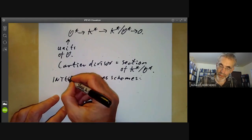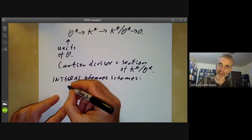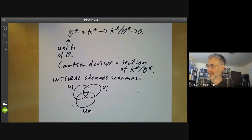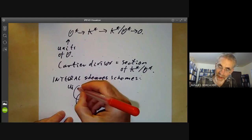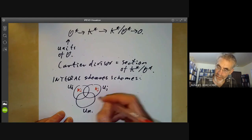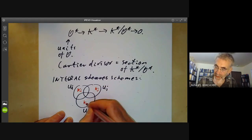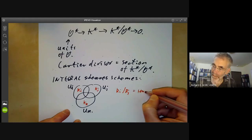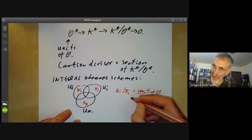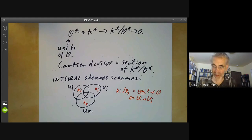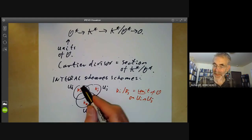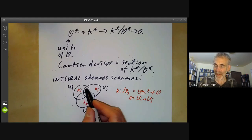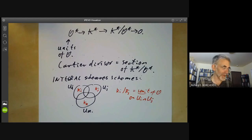All this means is you cover your scheme by a finite number of open sets, say U_i, U_j and U_k. On each of these open sets, you choose an element K_i of the function field. And K_i over K_j has to be a unit of O on U_i intersection U_j. Furthermore, if you multiply these elements K_i by units, that doesn't change the Cartier divisor. So you can think of the Cartier divisor as being something like the zeros of K_i, at least if the scheme is non-singular.